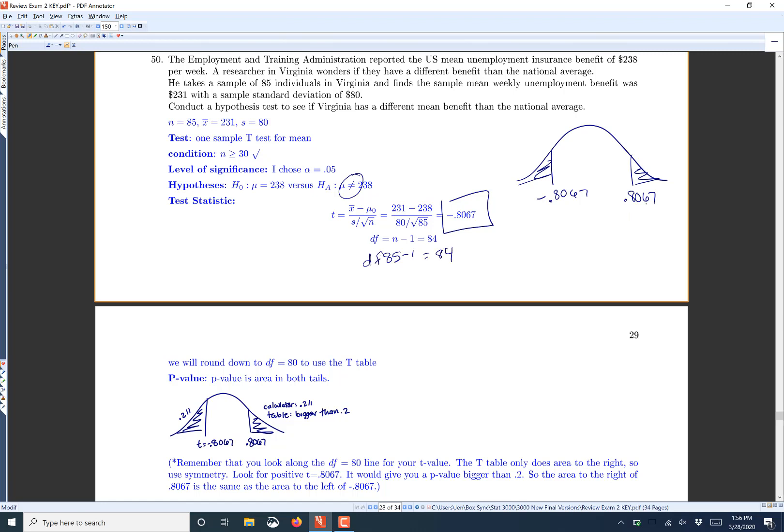So we know we want to look up an area, we know our degrees of freedom. So we'd go down to the t-table. The t-table always gives us areas to the right. I know that's different than the normal table. I don't know why all the textbooks do that.